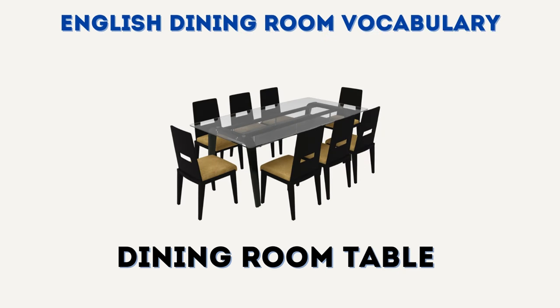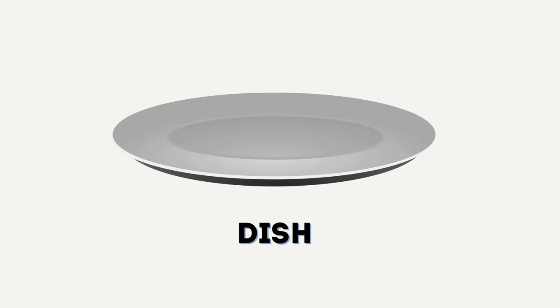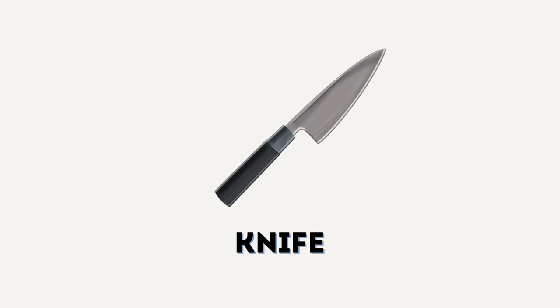English dining room vocabulary. Dining room table. Dining room table. Cups. Cups. Dish. Dish. Knife. Knife.